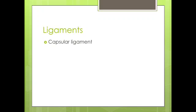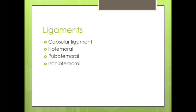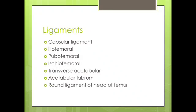Moving on to the ligaments. First is the capsular ligament, that is the fibrous joint capsule. The hip bone as a whole is made up of ilium, ischium, and pubis. There are three ligaments which have attachments on these bones and the femur — these are the iliofemoral, pubofemoral, and the ischiofemoral ligament. Then there is the transverse acetabular ligament, acetabular labrum, and the round ligament of head of femur.